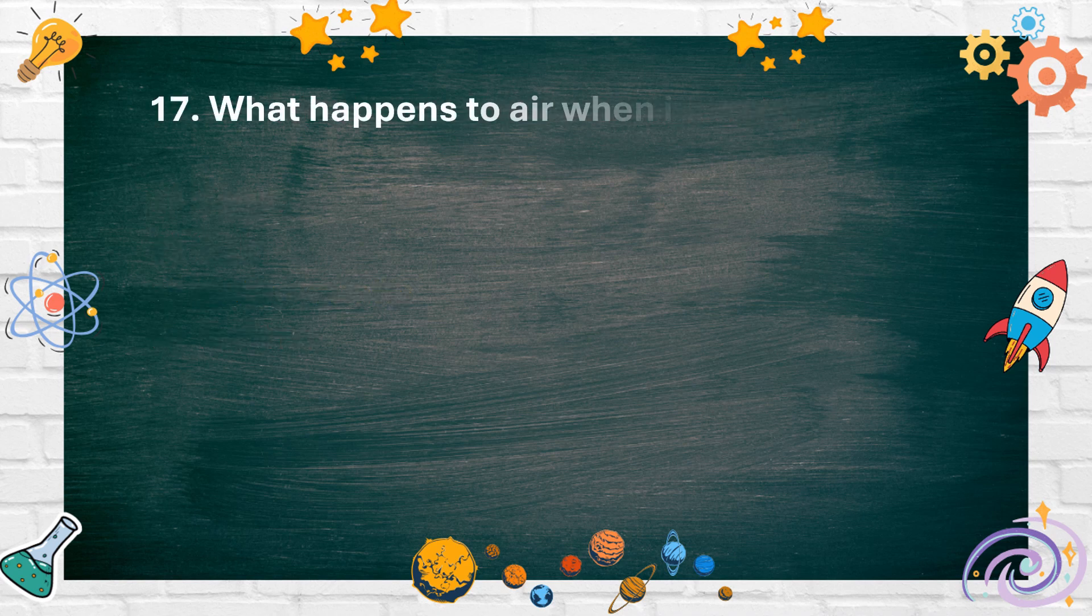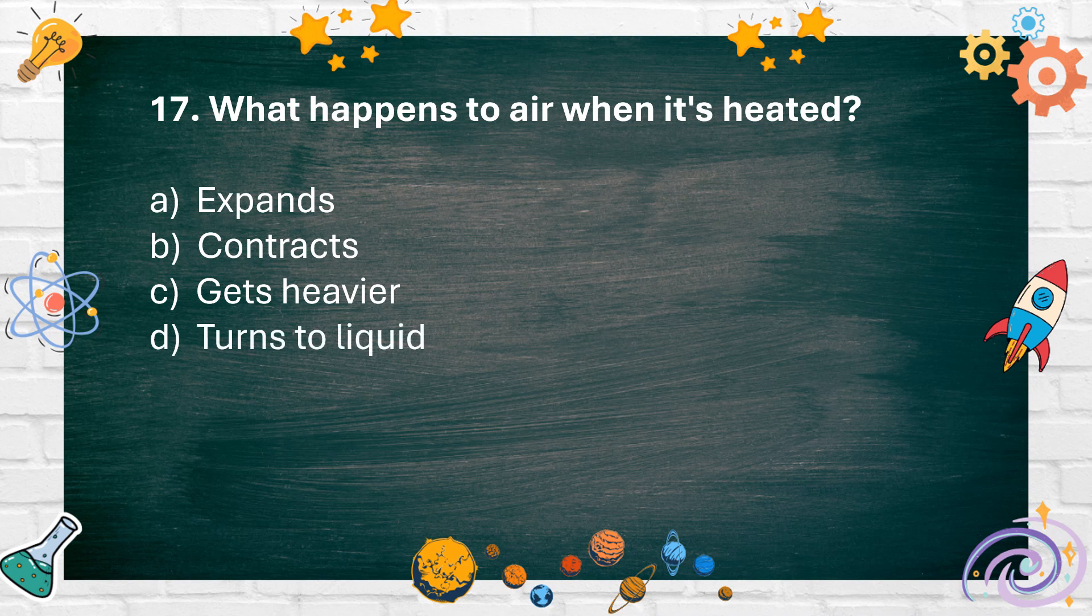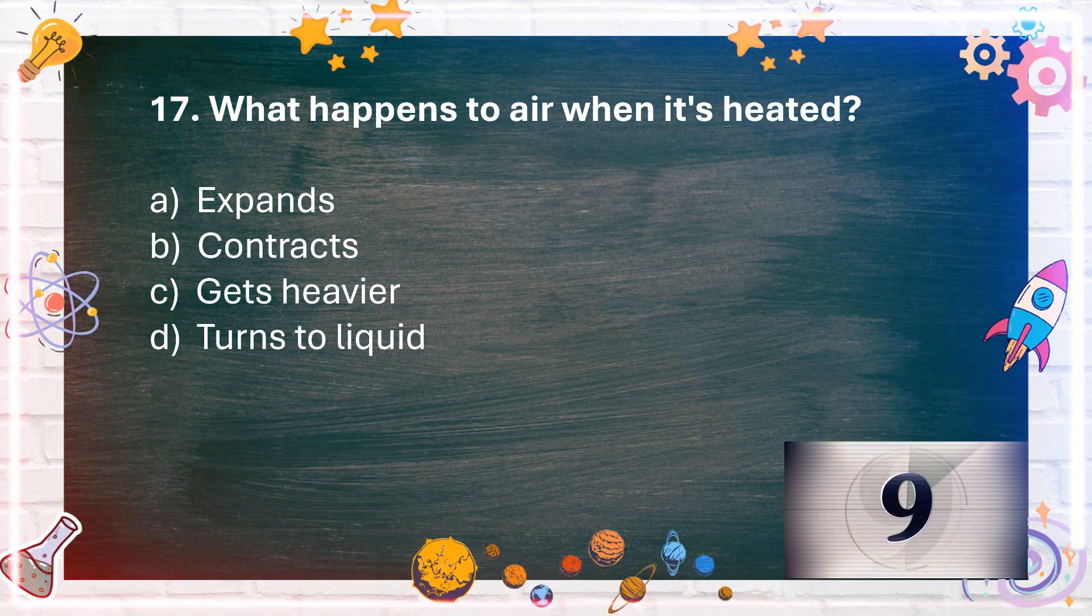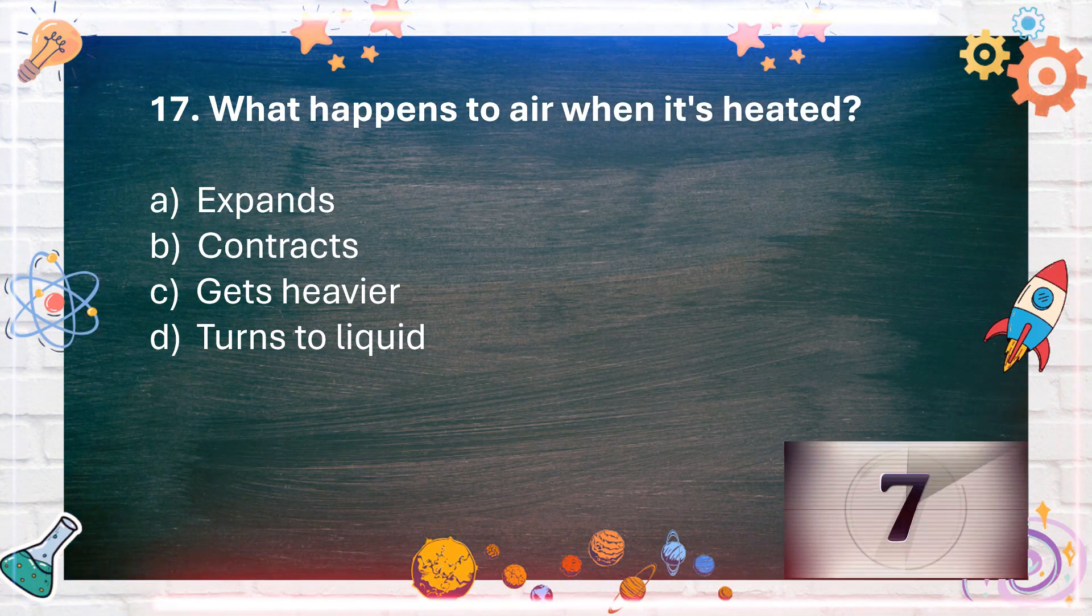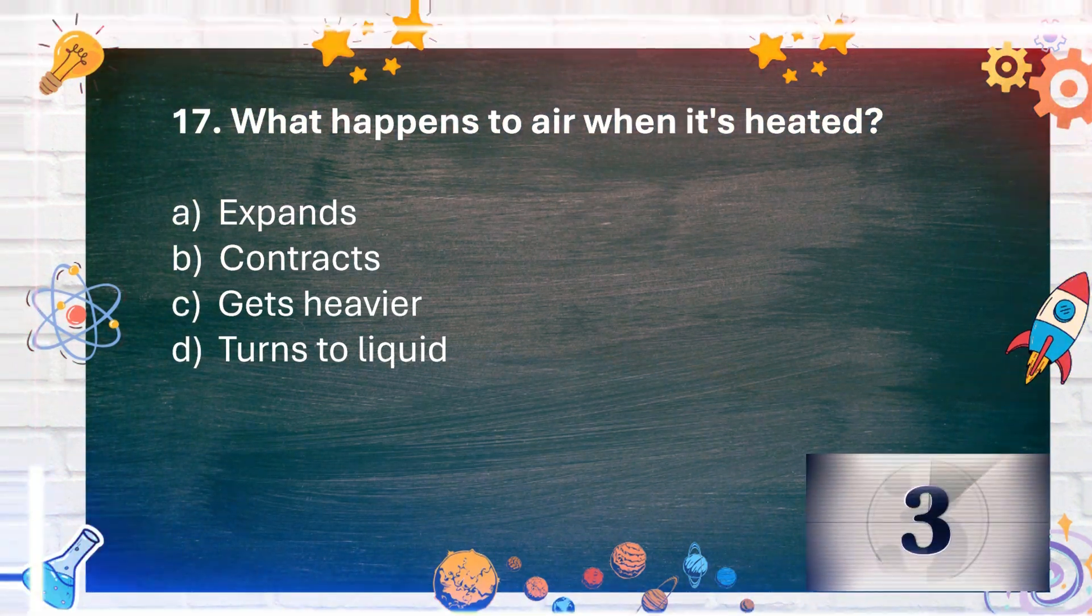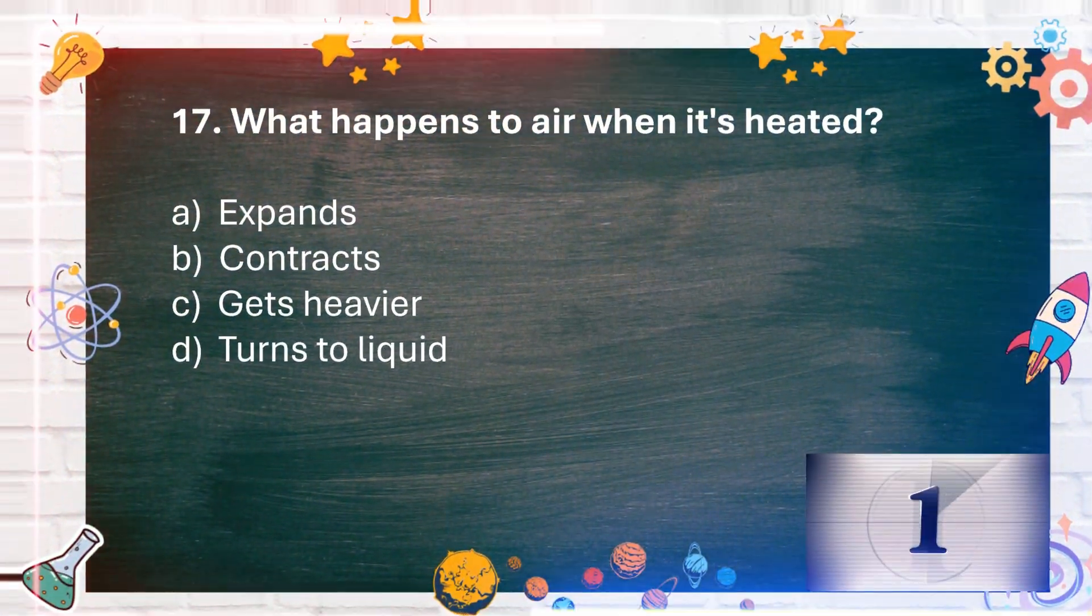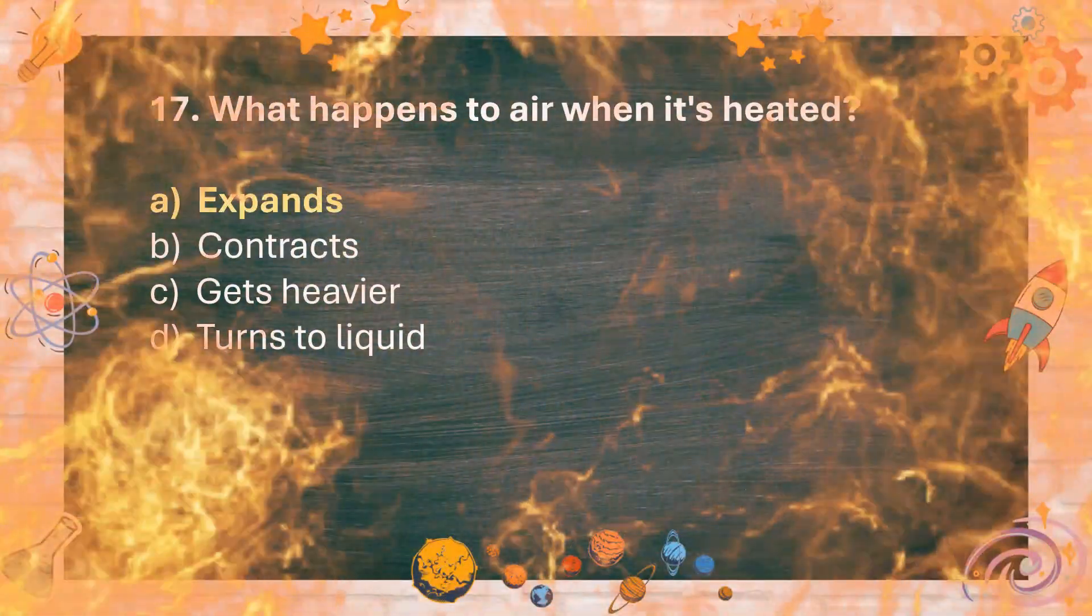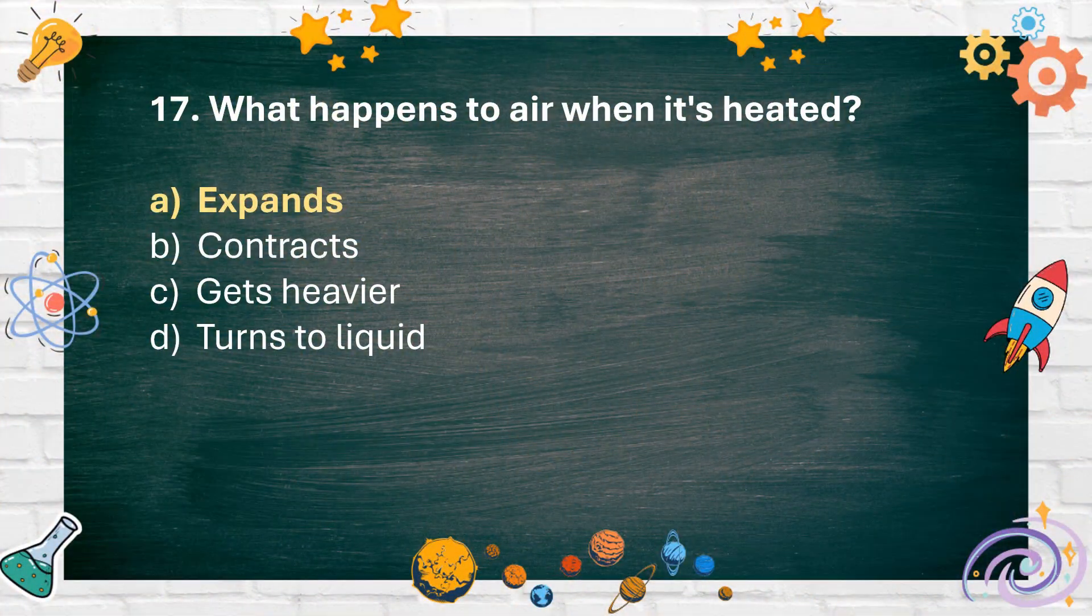Number 17: What happens to air when it's heated? A. Expands. B. Contracts. C. Gets heavier. D. Turns to liquid. The answer is A. Expands.